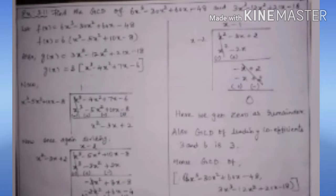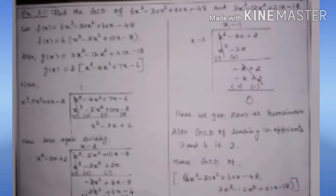Similarly, from G(X) I take 3 outside, giving X³ − 4X² + 7X − 6. Now I divide F(X) by G(X). Both have X cube as the leading term, so multiplying 1 with G(X) gives X³ − 5X² + 10X − 8. Changing signs, the remainder is X² − 3X + 2. Dividing X³ − 5X² + 10X − 8 by this remainder, and multiplying X with X², the new remainder becomes 2X − 4. Taking 2 outside, I divide X² − 3X + 2 by X − 2 and get remainder 0.